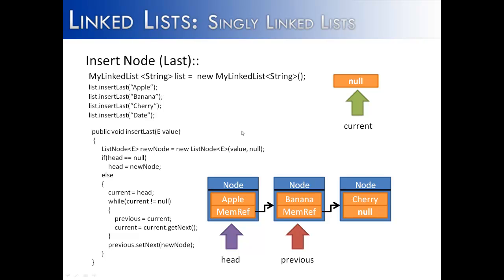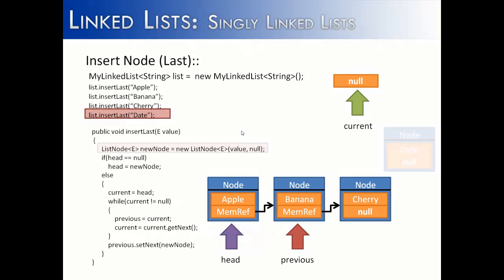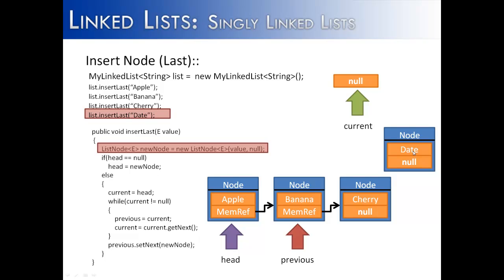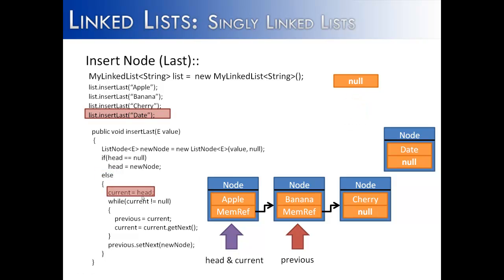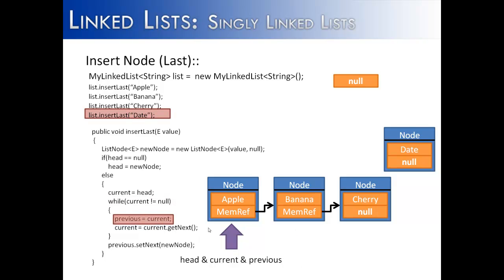Finally we're going to insert the node Date into our linked list. We create a new node Date with a next value of null. We check: is head null? No, it references the first link in our list. Go to the else statement — current equals head, so head and current are the same first node.